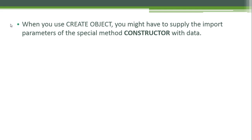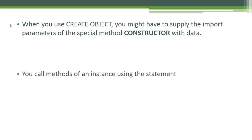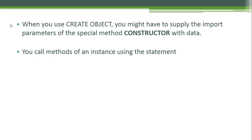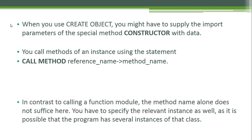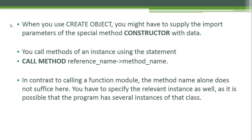When you use CREATE OBJECT you might have to supply the importing parameters of the special method constructor with data. You call methods of an instance using the statement: CALL METHOD, the reference name, dash-arrow (->), and the method name. In contrast to calling a function module, the method name alone does not suffice — you have to specify the relevant instance as well, since the program may have several instances of that class.